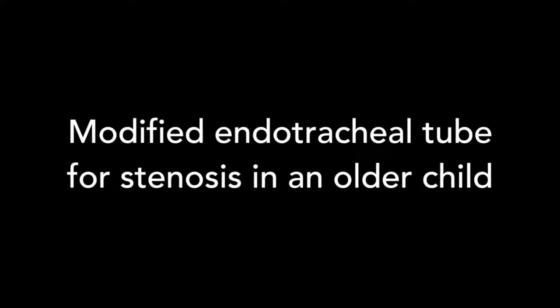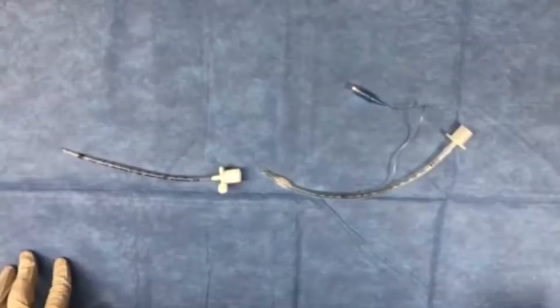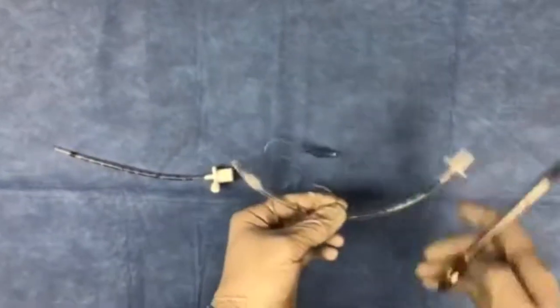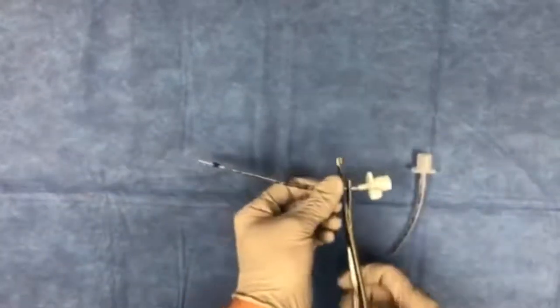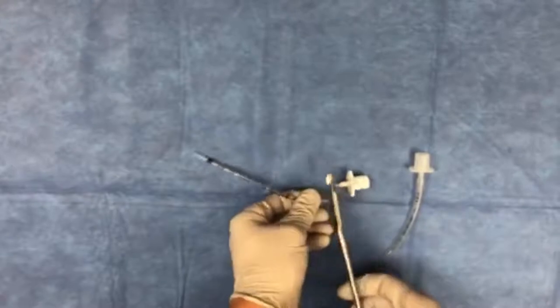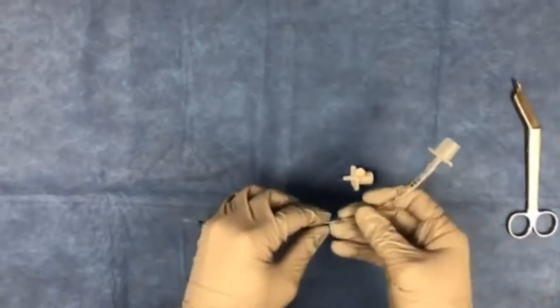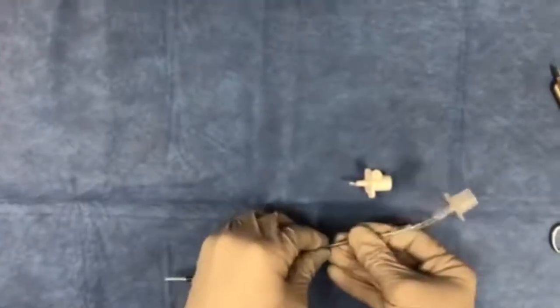When evaluating older patients with airway obstruction and concerns for either subglottic or tracheal stenosis, a modified endotracheal tube is going to be necessary to have on hand. Endotracheal tubes that are narrow in diameter are typically shorter in length; therefore, a modified endotracheal tube needs to be created to be narrow yet long. The video shows how to create one to have on the back table in case it is necessary during evaluation.